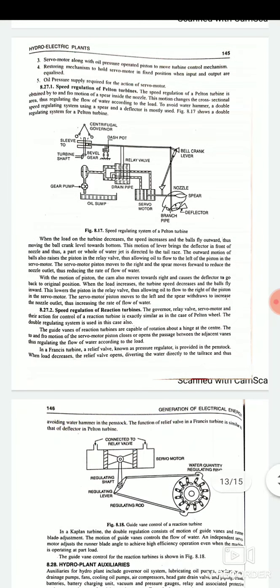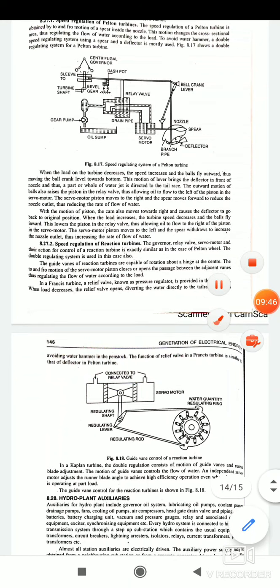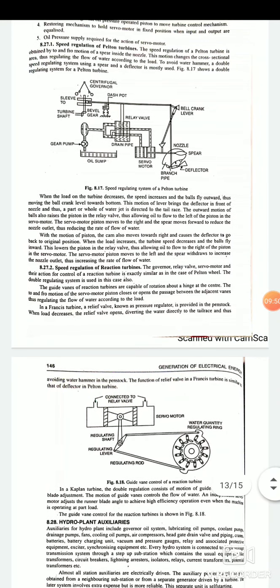Next is your speed regulation of a Pelton turbine. This is the systematic diagram of a speed regulating system of a Pelton turbine. When the load on the turbine decreases, the speed increases and the balls fly outward, thus moving the ball crank lever towards bottom. This motion of the lever brings the deflector in front of the nozzle, so a part of the water jet is directed to the tail race. Outward motion of the balls also raises the piston in the relay valve and allowing oil to flow to the left of the piston in the servo motor. The servo motor piston moves to the right and spear moves forward to reduce the nozzle outlet, thus reducing the rate of the flow of water. So in this way we can control the flow of water with the help of speed regulation mechanism.